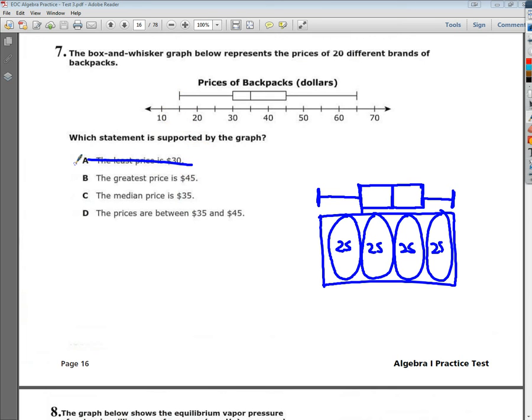B says the greatest price is $45. Well, obviously, that's not true. That's where the third quarter ends, but it's still not the whole dollar.